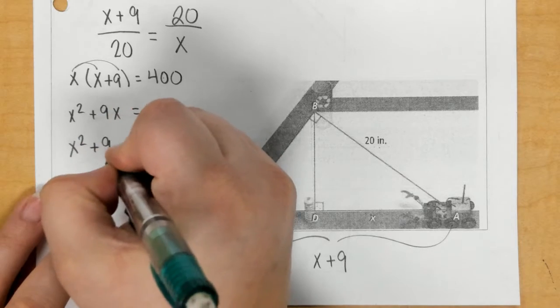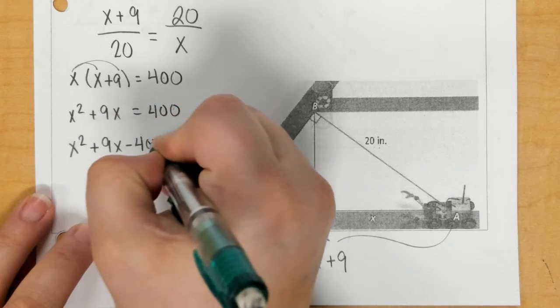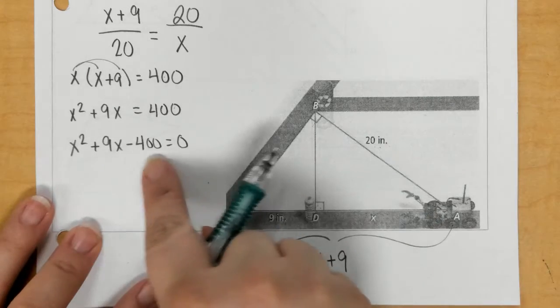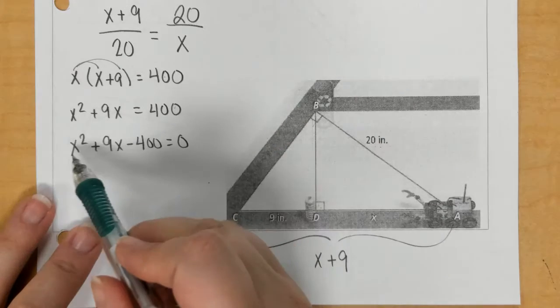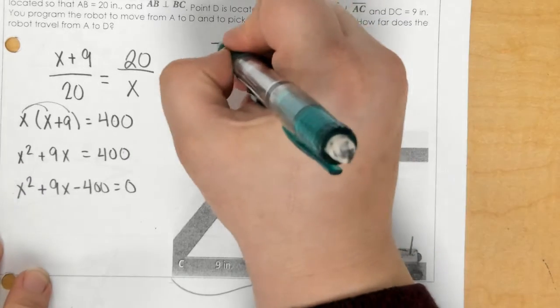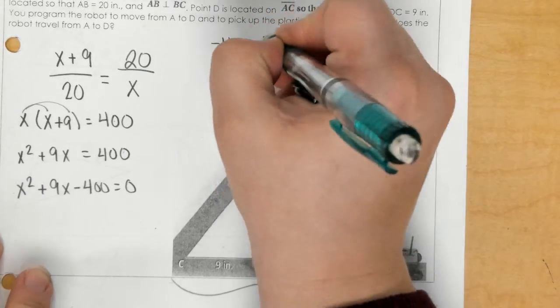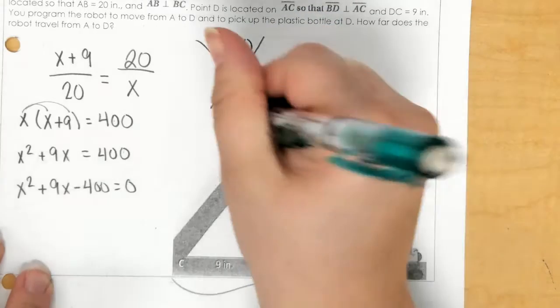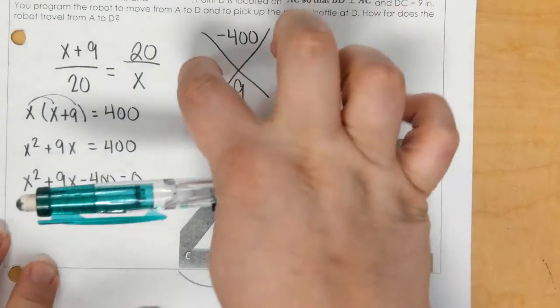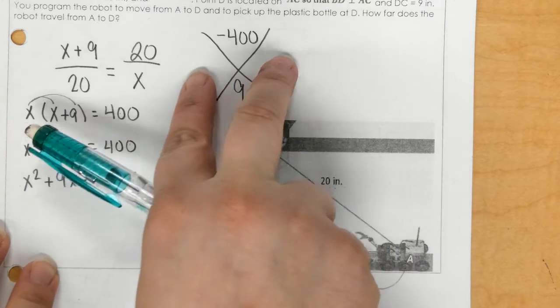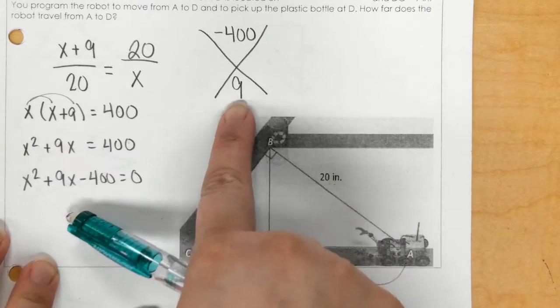So, if I move the 400, it becomes negative 400. Now, I need to factor this. And so, how I teach factoring is I say we do 1 times negative 400 and that gives me negative 400. And I have to figure out the middle term, which is 9. And what times what can multiply to be negative 400, but those two numbers can combine to be a 9.